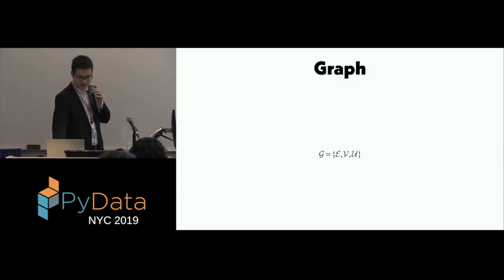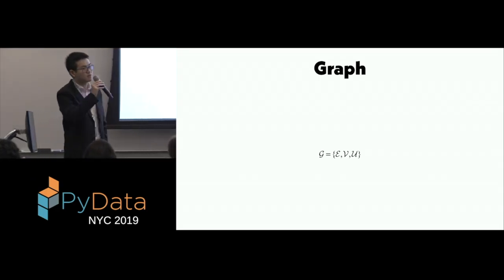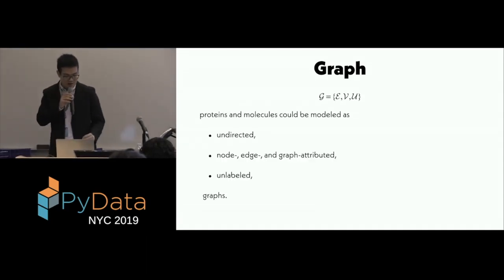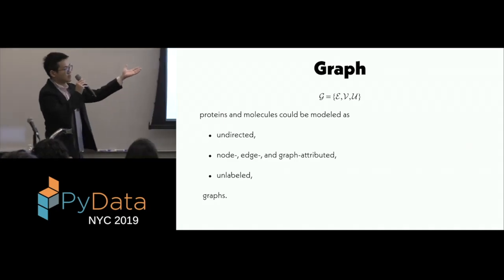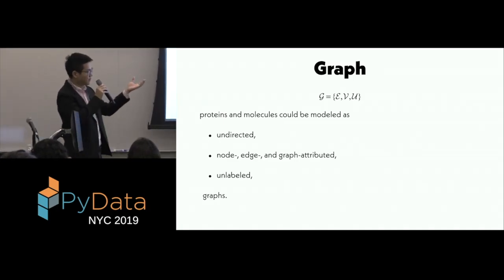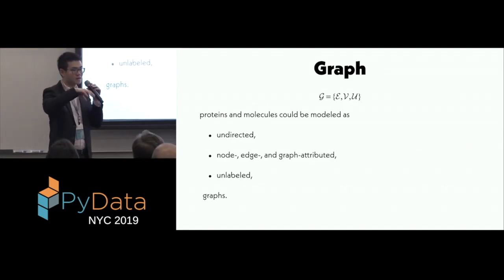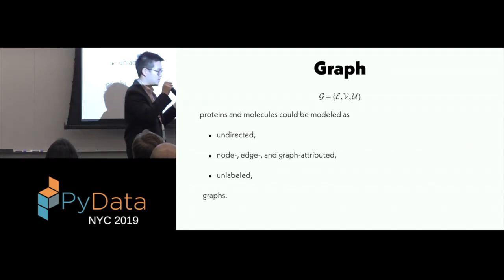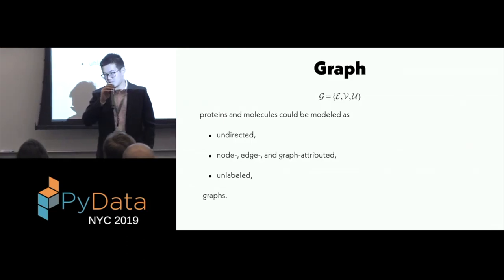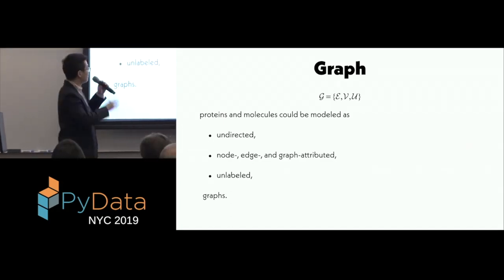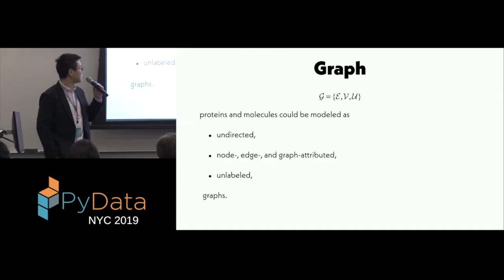So what is GraphN and what is GraphNet? In the terminology of graph learning, the graph is a set of sets. It is a set of the sets of edges, vertices, and universal attributes, or the master nodes. Here, we model proteins and molecules as the edges are, of course, the chemical bonding of proteins and molecules, vertices are the atoms, and the universal attributes is something that you put as the property of the entire molecule or the entire protein. Something like drug likeness, solubility, lipophilicity, binding free energy, and so forth, could be all put in the master node.